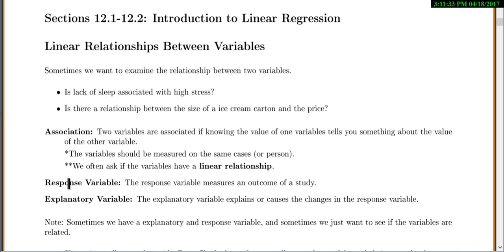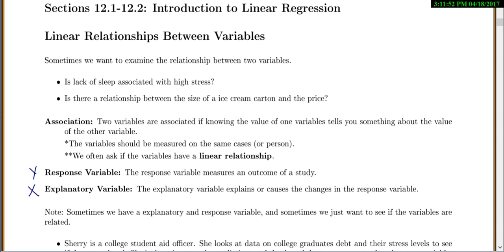We have two kinds of variables. We have our response variable, which measures the outcome of the study. And then we have our explanatory variable, where we're trying to explain the changes in the response variable. Or, if you prefer x's and y's, y is going to be your response and x is your explanatory.